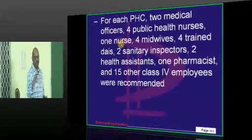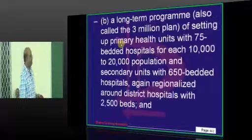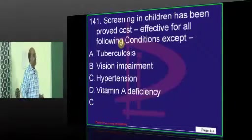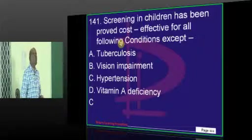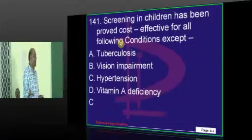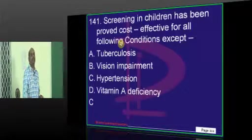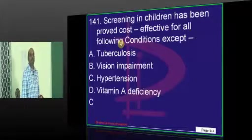Then all these committees you have to read, doctor. Screening in children is very cost-effective for TB, vision impairment, vitamin A deficiency, not for BP, not for hypertension.